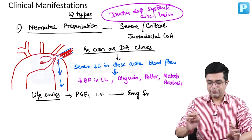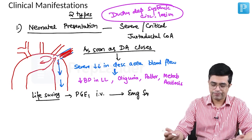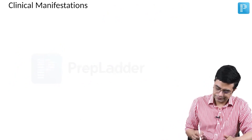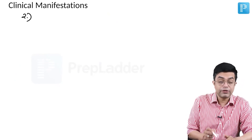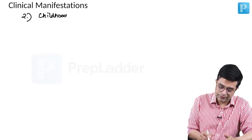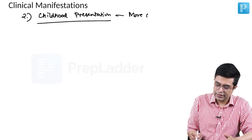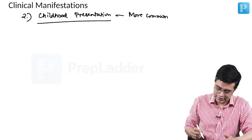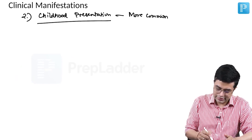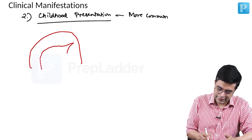This neonatal form is rare but may be asked in exams. The second presentation is the relatively more common form — the late childhood presentation. In these patients the narrowing exists, but is not severe.